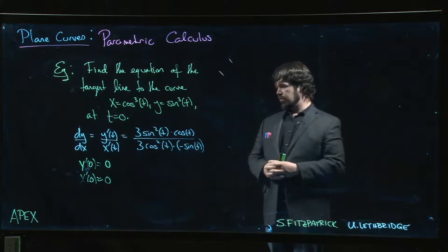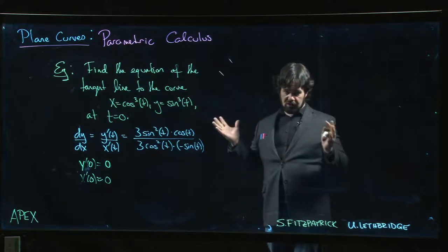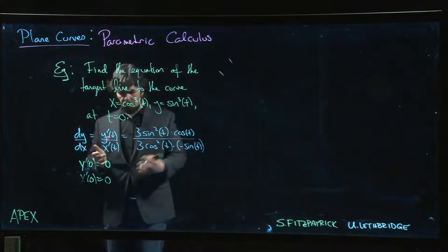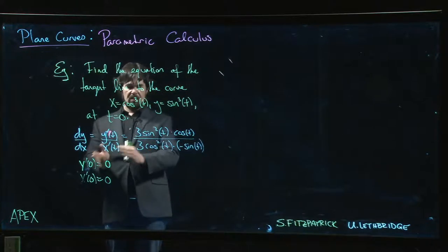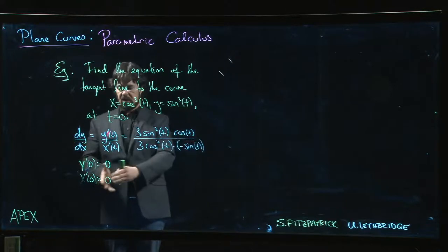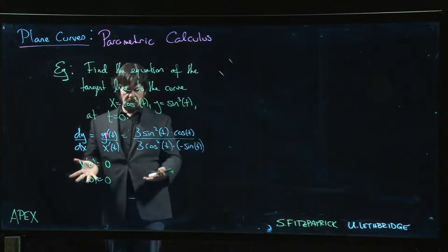We know one thing about indeterminate forms: you shouldn't handle them by just canceling because you're changing the domain. You should handle them with a limit, because the limit lets us cancel while staying away from t exactly equal to zero, telling us what's happening close to t equal to zero.